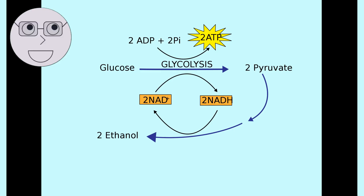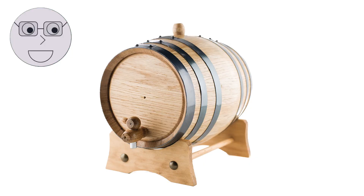During the fermentation process, a variety of chemical reactions take place. Yeast consumes the sugar in the grapes and produces alcohol and carbon dioxide. This process is called alcoholic fermentation. As the alcohol content of the wine increases, the yeast eventually dies off, and the fermentation process stops.